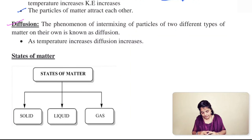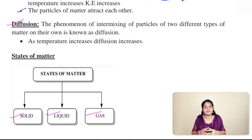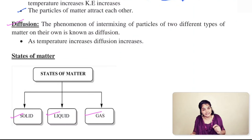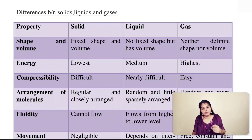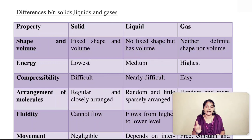Coming to the states of matter, matter is classified into three states: solid state, liquid state, and gaseous state. Nowadays, along with these three states, we also discuss the plasma state as well as Bose-Einstein condensate. Let us discuss the differences in properties observed with respect to these three states.